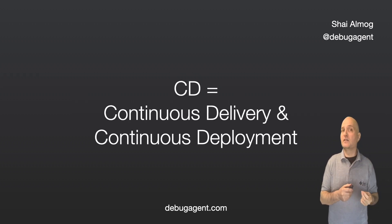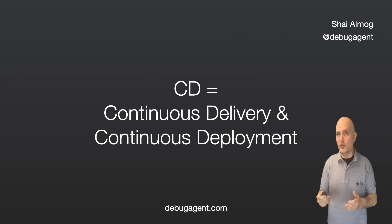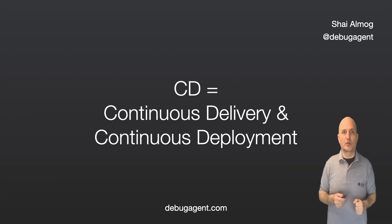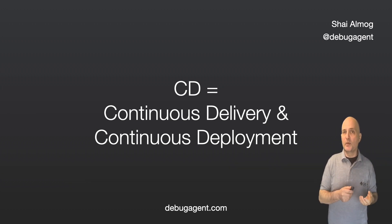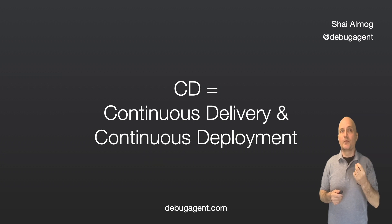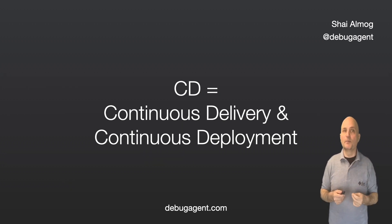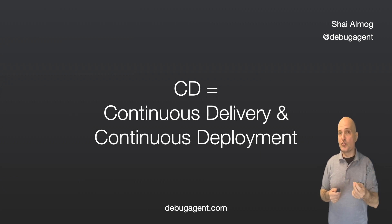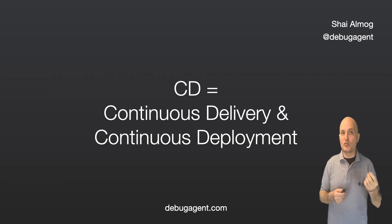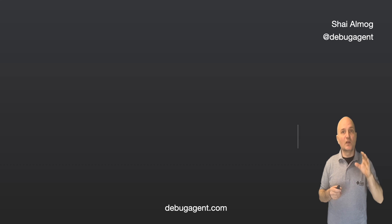Notice that CD stands for both Continuous Delivery and Deployment. This is a terribly frustrating acronym. The difference between the two is simple, though. Deployment relies on delivery — we can't deploy an application unless it was built and delivered. The deployment aspect means that merging our commits into the main branch will result in a change to production at some point, without any user involvement.